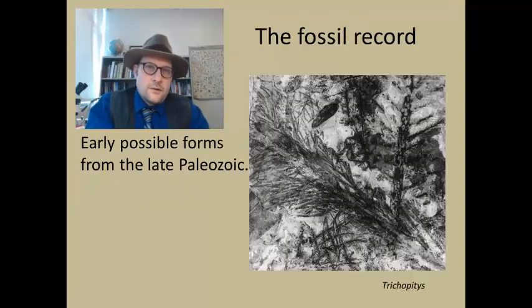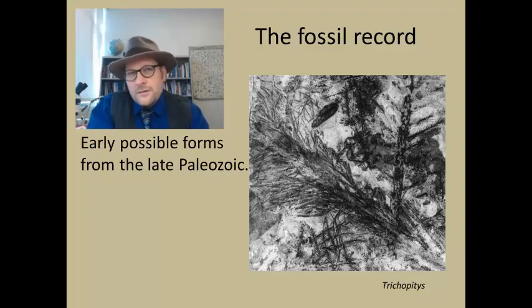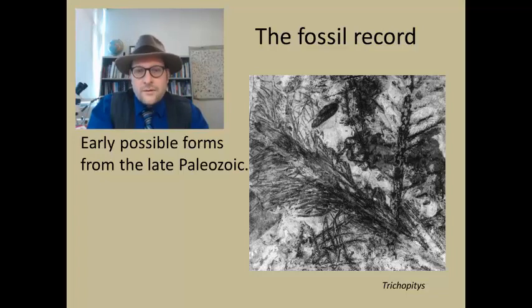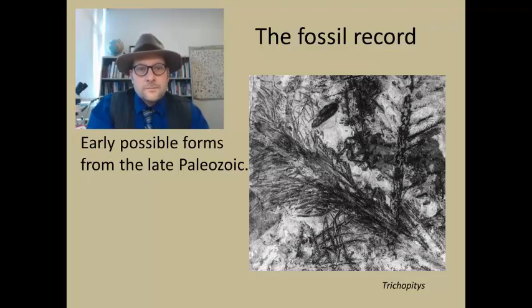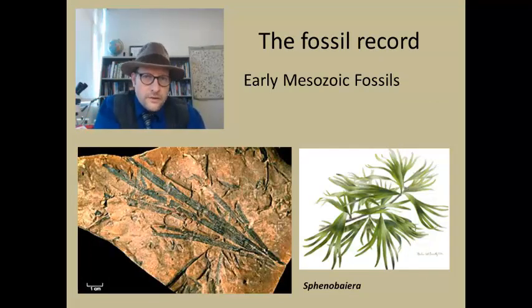The next fossil we will look at is Trichopityaceae, known from the Permian of France. It is also within the Trichopityaceae family and viewed as a possible ancestor to later ginkgos. Note that it too has rather slender needles and resembles fossil conifers or pine trees rather than a modern broad-leafed ginkgo. As we head into the early Mesozoic, we can see a transition among the fossil taxa toward coalescing those narrow needle-like leaves into a more fan-like leaf structure.